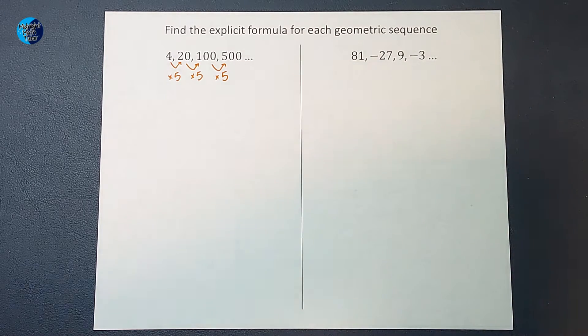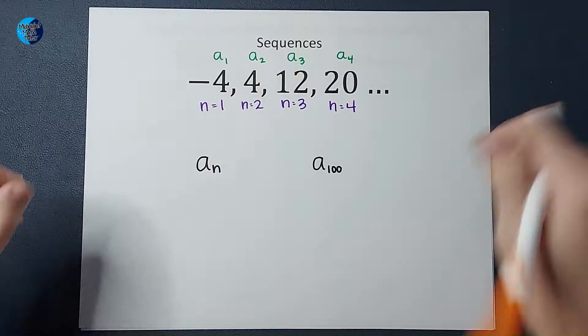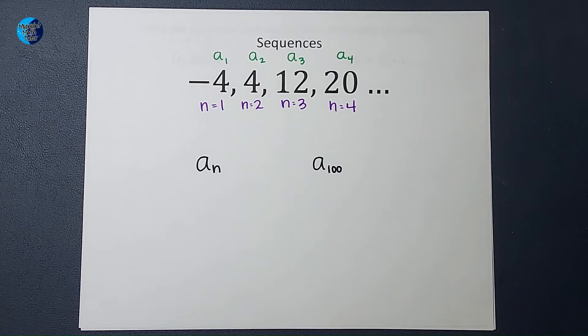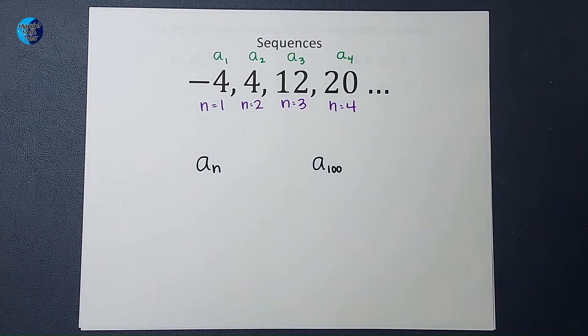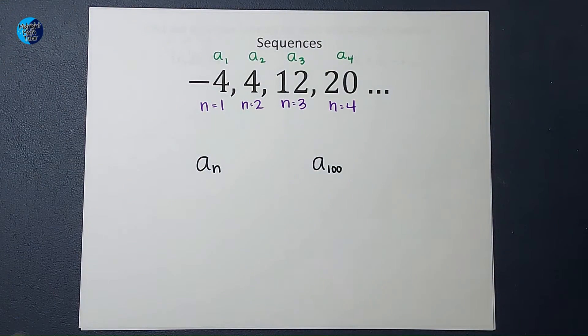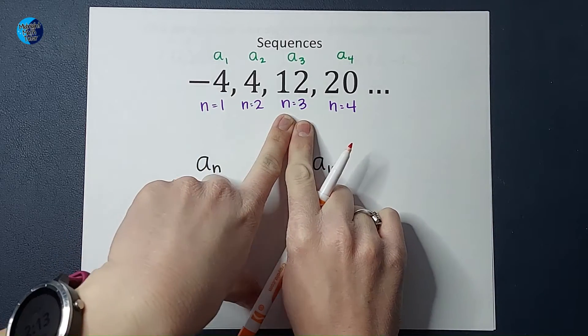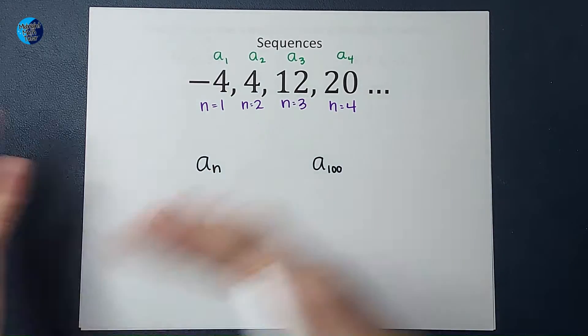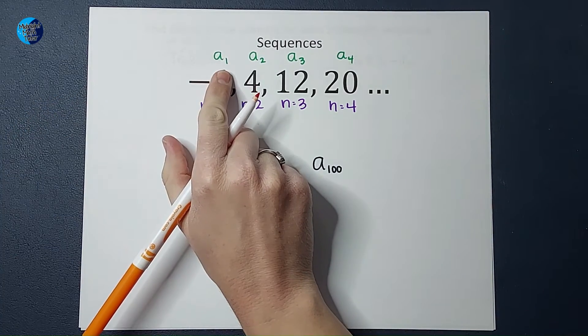Now before we figure out the explicit formula, I want to go over a little bit of terminology and then it falls together pretty quickly. So when you're working with these, you're going to see a lot of A's and a lot of N's. The N refers to the place it is in line, basically. The place in the sequence. So N equals one is the first number in the sequence. N equals three is the third number in the sequence. And on it goes, right?